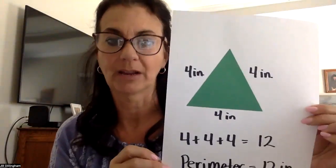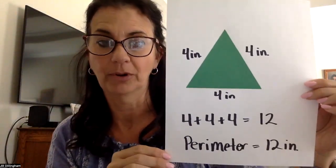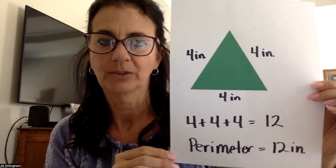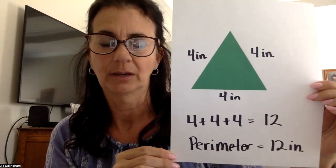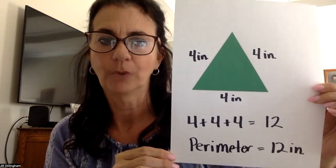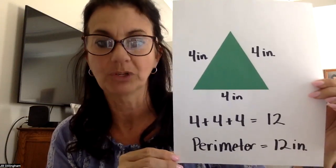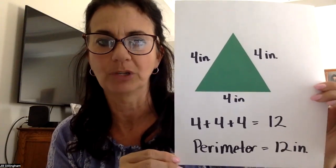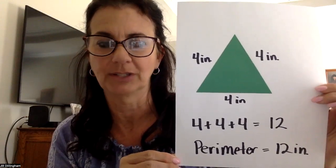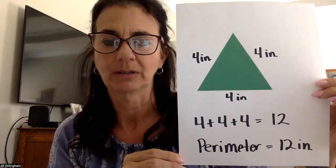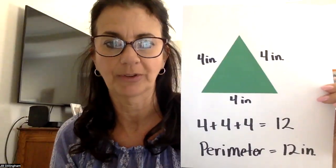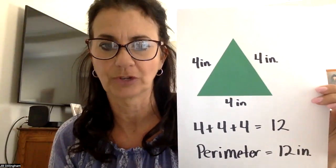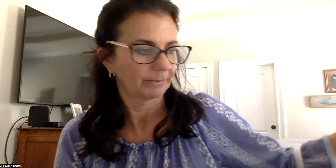Here's a fun one that's a little different — this one is a triangle. You can also find the perimeter of three-sided shapes. My triangle has four inches on each side, so four plus four plus four — three fours would be 12. The perimeter of this shape would be 12 inches. If you needed to figure out the length of string to wrap around the shape, you would need 12 inches of string.